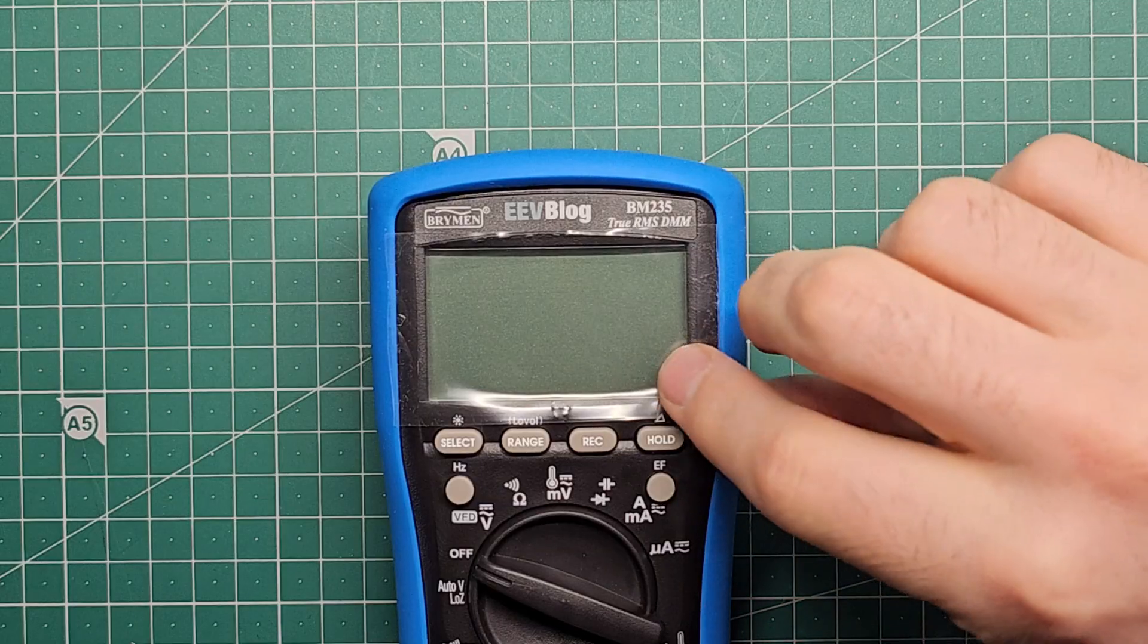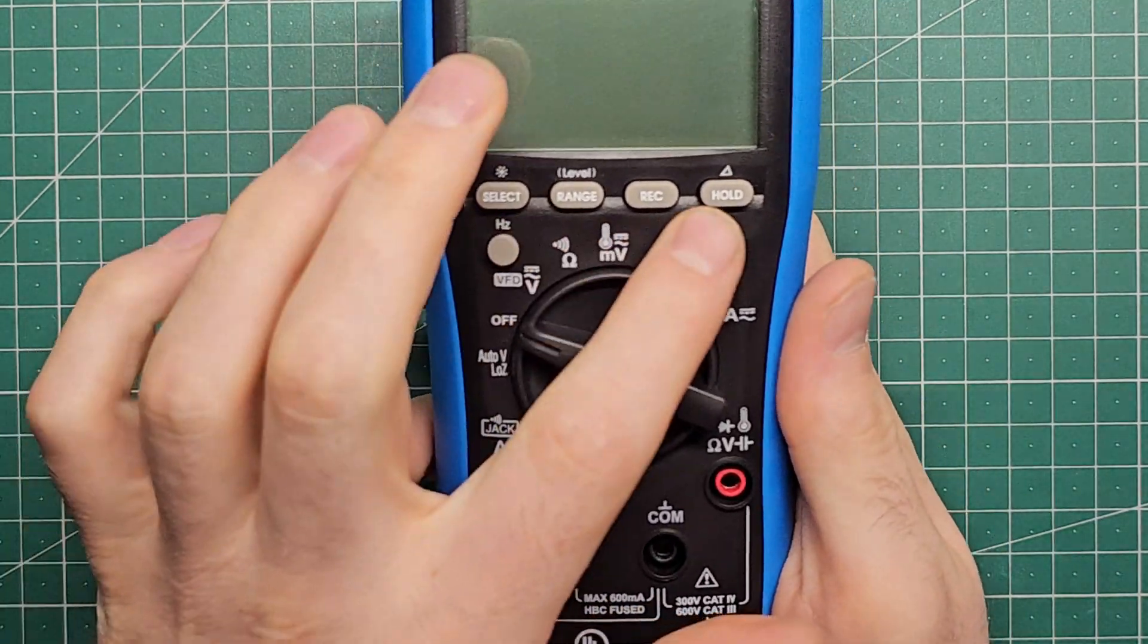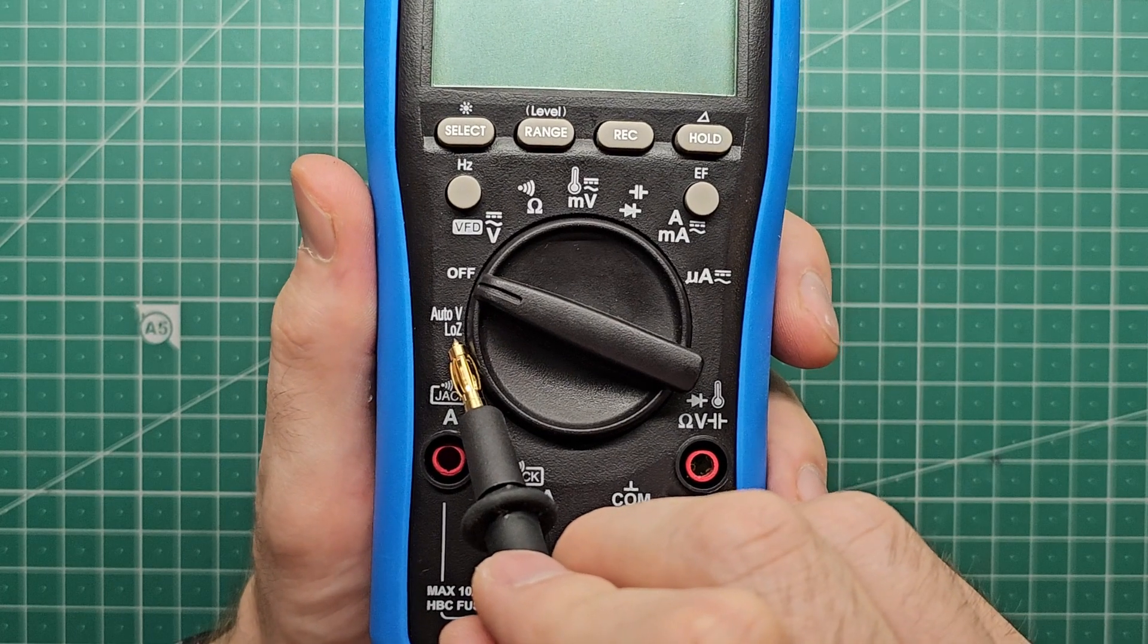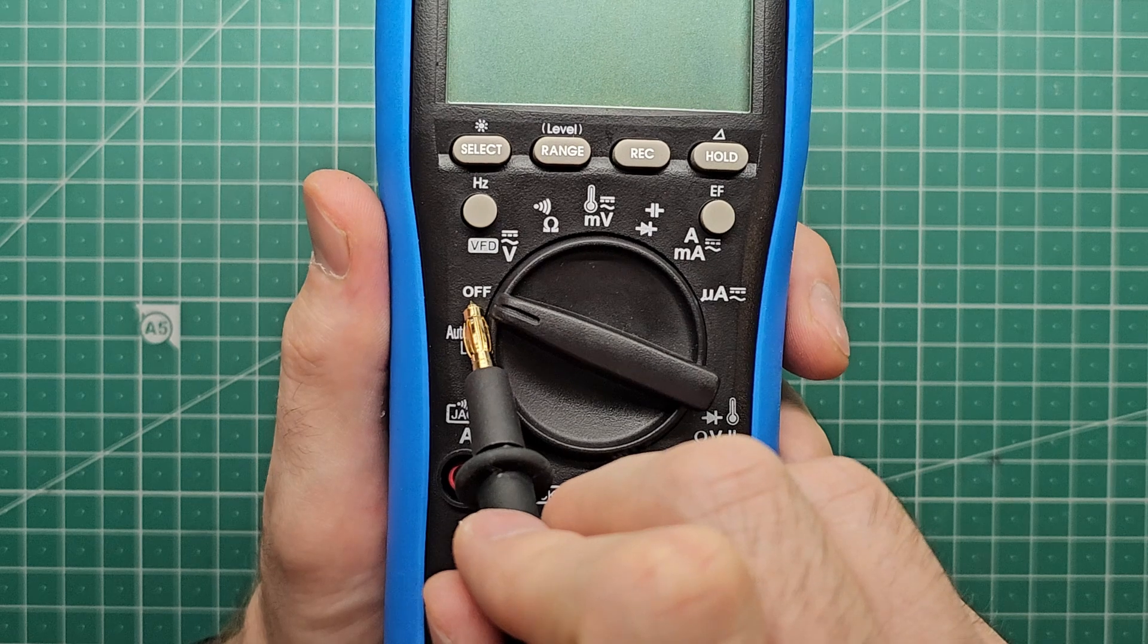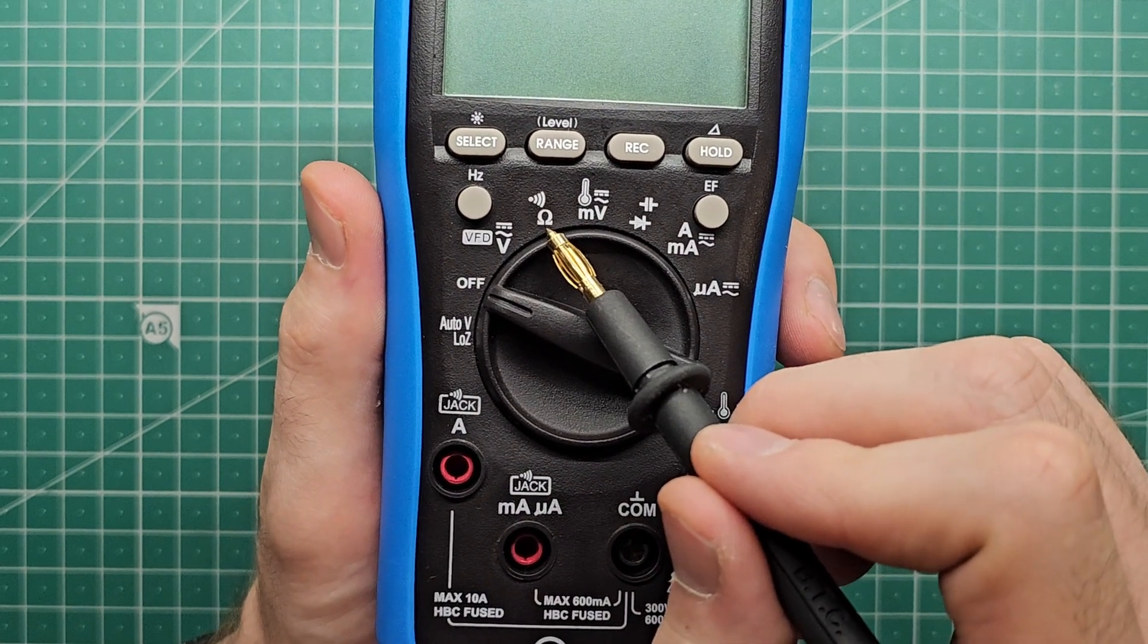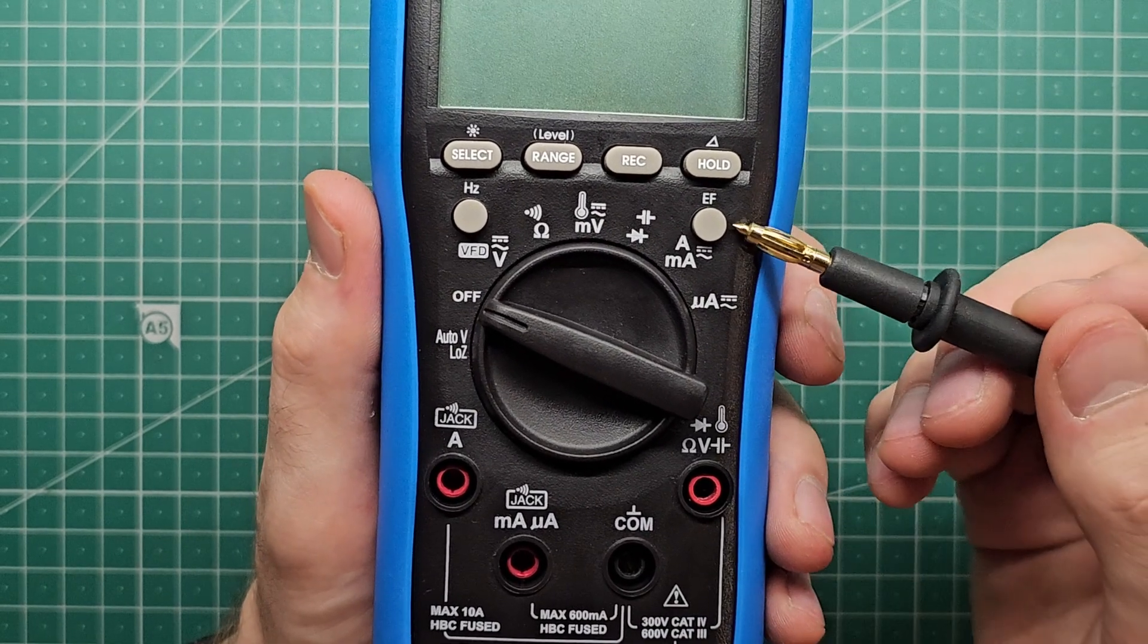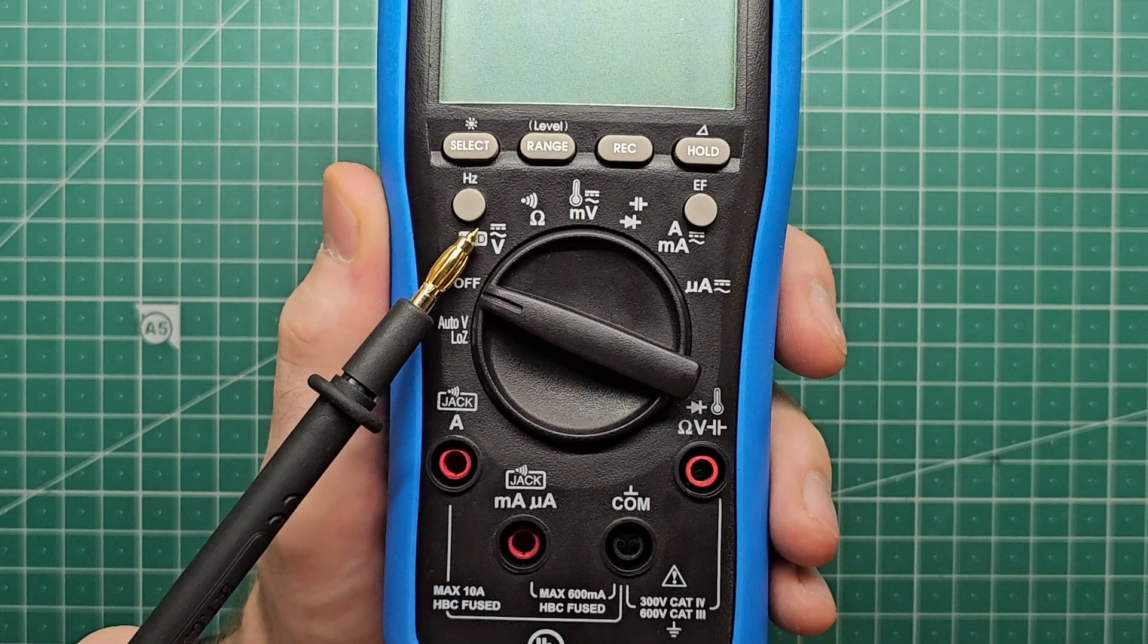Feel free to skip ahead to different timestamps if you're looking for an explanation of a specific feature. When we first take a look at the multimeter we can see it's got a few different buttons and a dial with a few different modes. Going around the circle we have voltage with automatic range and a low input impedance, OFF that's self-explanatory, DC and AC voltage, resistance and continuity, millivolts and temperature, diodes and capacitors, amps and milliamps and then microamps. There's also a non-contact electric field detector and frequency for whatever voltage or current you're measuring.